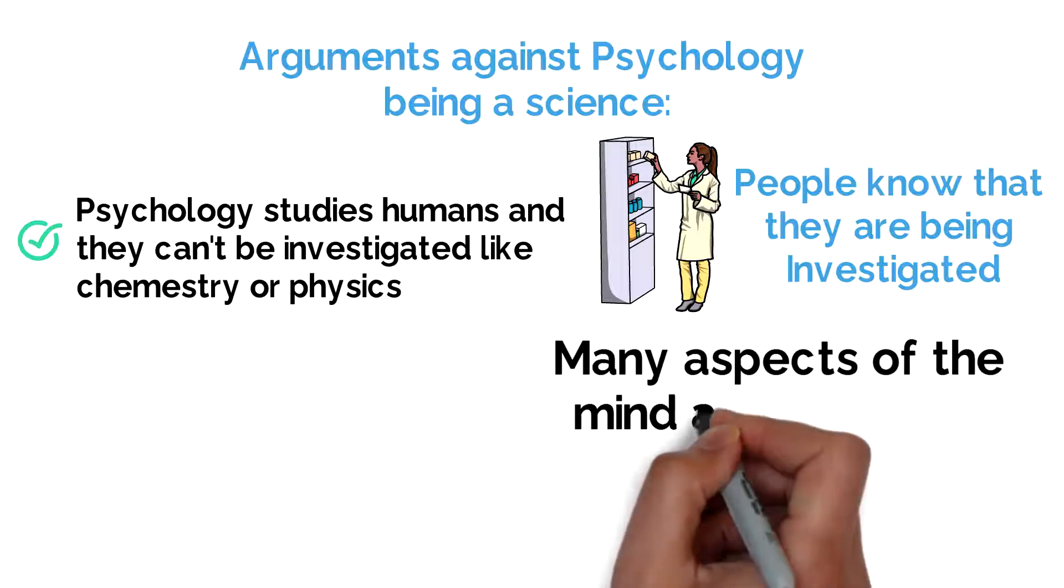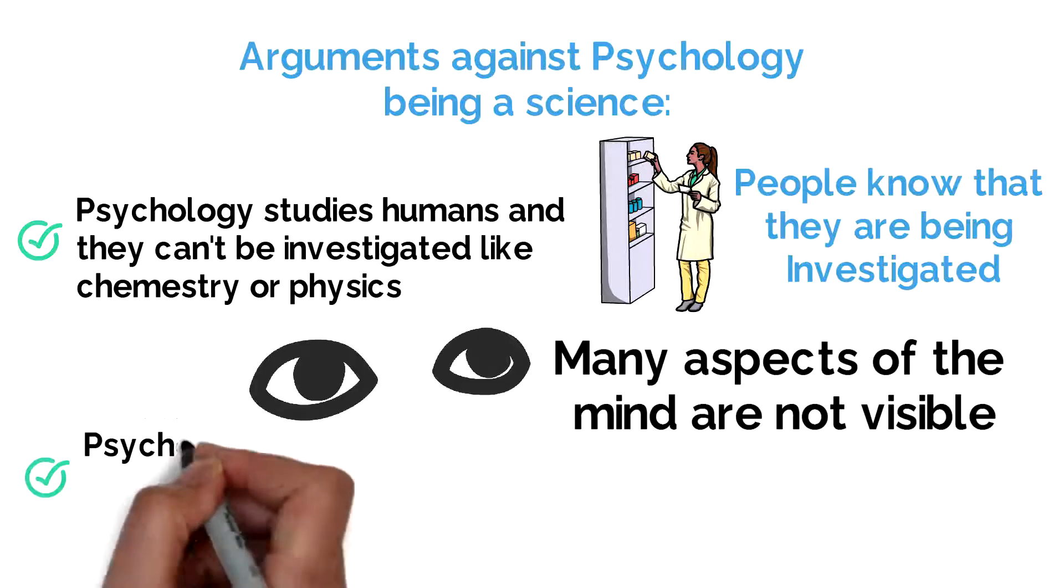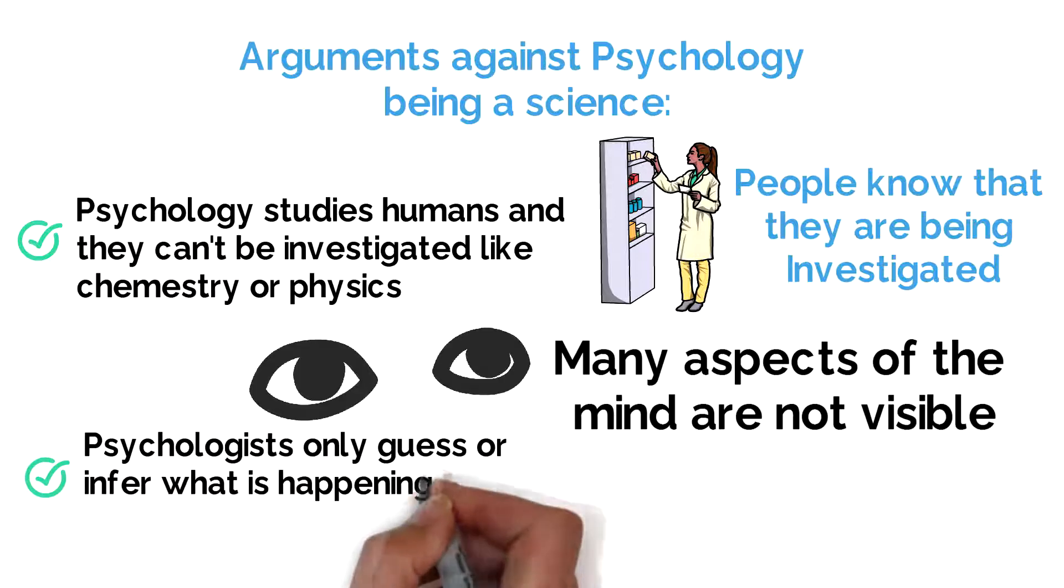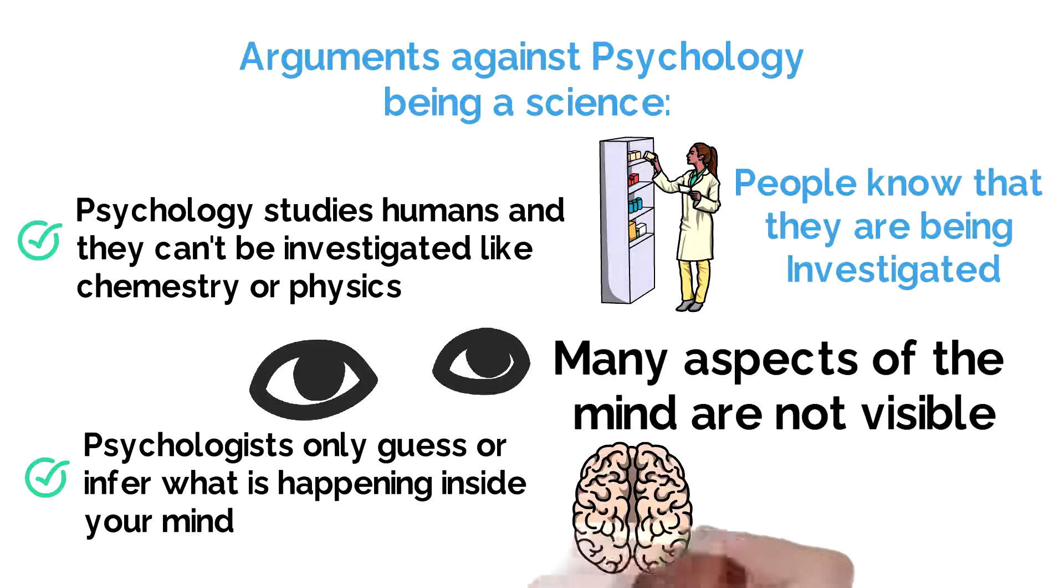Much of what psychology is interested in – the mind, motivation, emotion, and so on – is not yet open to genuine scientific and empirical research because it is not actually observable. Psychologists only guess or infer what is happening, rather than collecting direct empirical data.